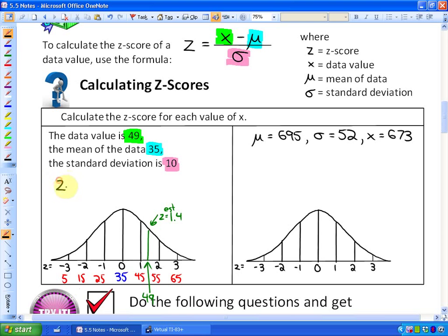the z-score would be equivalent to 49 minus 35 over 10. And calculate the numerator first, 49 minus 35 is 14 divided by 10, and 14 divided by 10 is actually 1.4.